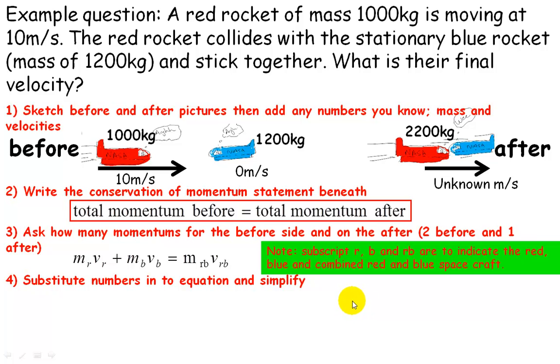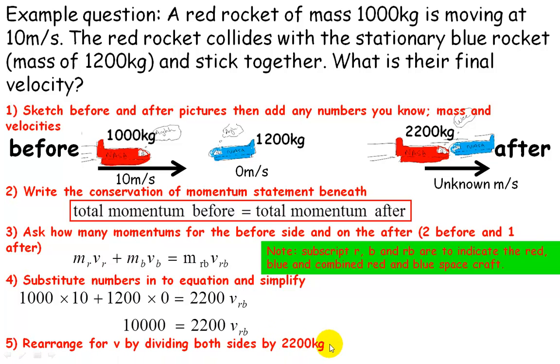Now we can substitute the numbers into the equation and simplify. So, the mass of the red was 1,000, it was doing 10 metres per second, this was 1,200, it was doing 0. We don't know the final velocity, that's why it's just been left as the letter, but we do know its mass was 2,200 kilograms. We can simplify, we can see that the 1,200 times 0 is equal to 0, so that cancels, which means nothing, 0 times something is nothing. Now we need to rearrange for vrb, divide both sides by 2,200, means that 2,200 on this side will cancel the 2,200 here, and 10,000 divided by 2,200 will give us 4.5 metres per second, so that's your final answer.